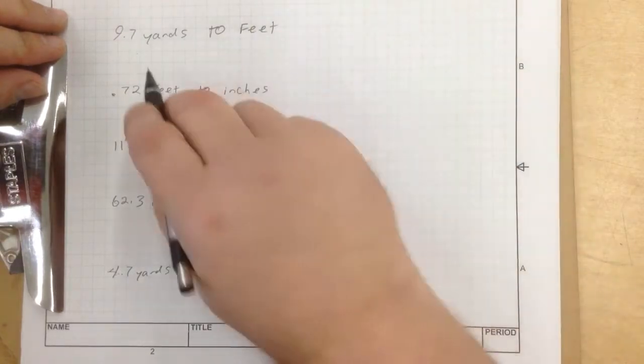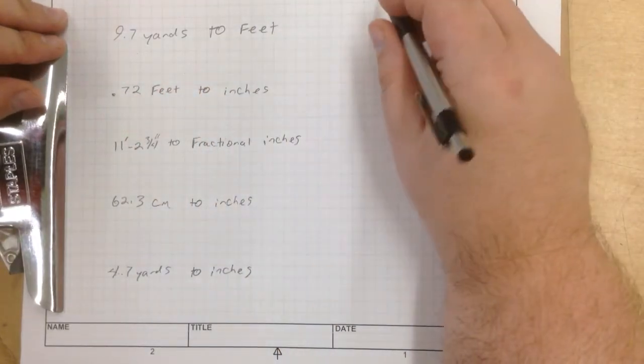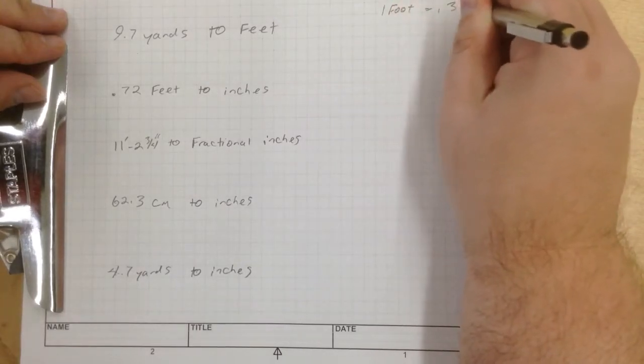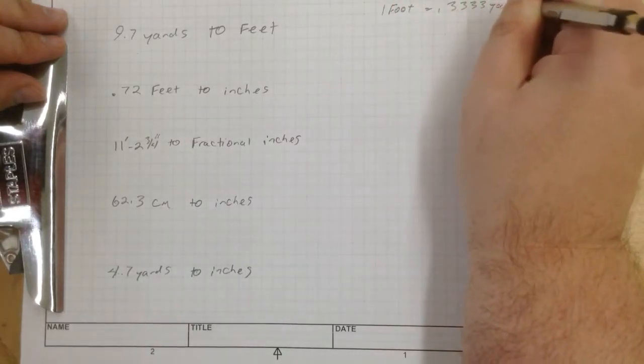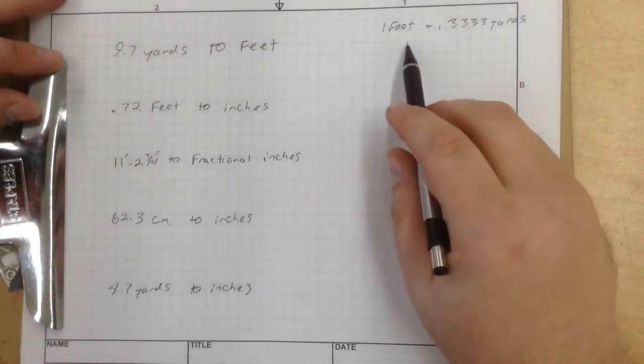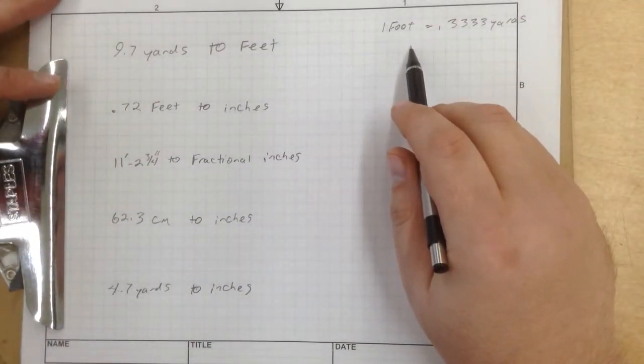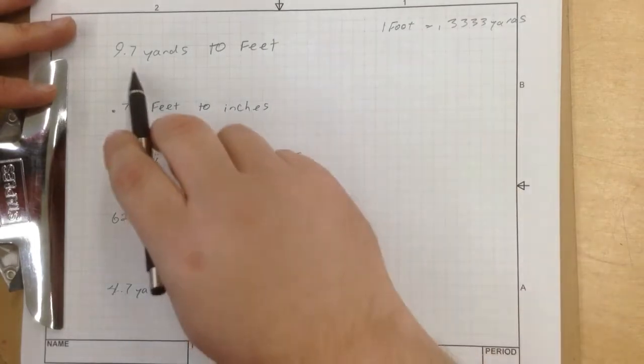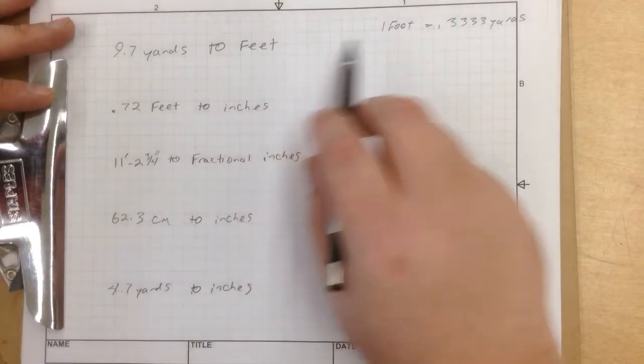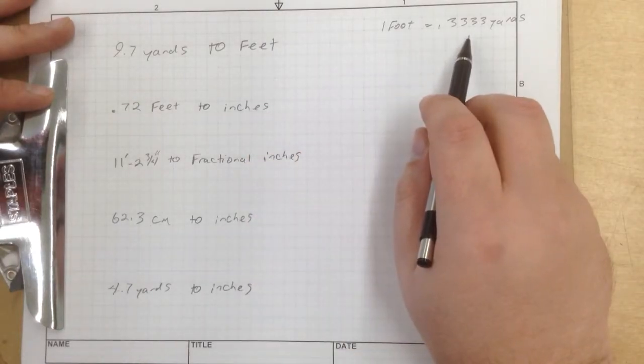So let's figure out 9.7 yards to feet. One foot is equal to 0.3333 yards. Okay, so that is pretty much a given. That is our key. That's our cipher. So the easiest way to do this, when you need to convert 9.7 yards to feet, you know that one foot equals 0.3333 yards.